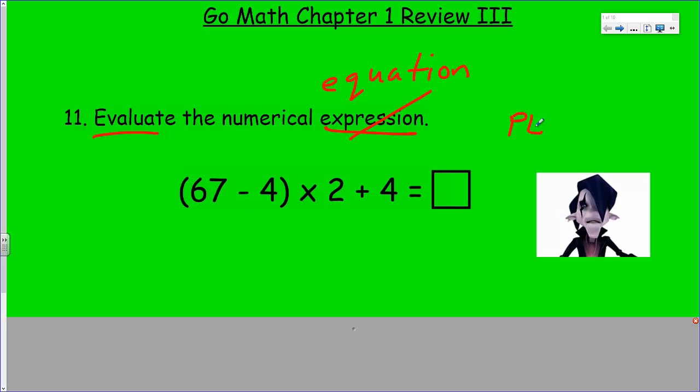Let's evaluate it nonetheless. 67 minus 4, we always do parentheses first because of our good buddy PEMDAS. Please Excuse My Dear Aunt Sally, or most people just memorize it by PEMDAS. We do parentheses first, so 67 minus 4 is 63. We get 63 times 2 plus 4.